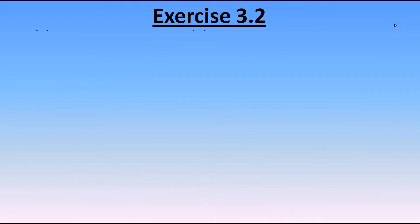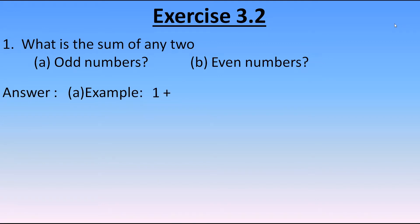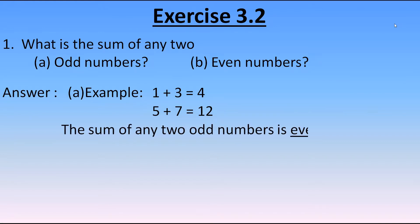Here is the first question: What is the sum of any two odd numbers, even numbers? We will write the answer with the help of examples. First, taking two odd numbers 1 and 3 — when I add them, I get 4, which is even. Similarly, 5 plus 7 gives 12; both are odd but the answer is even. So the sum of any two odd numbers is even.